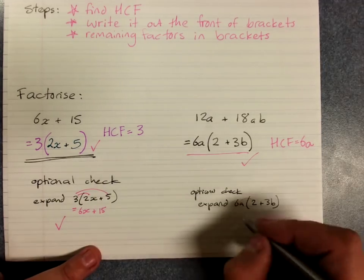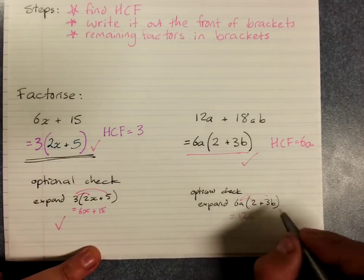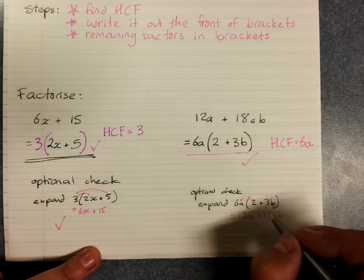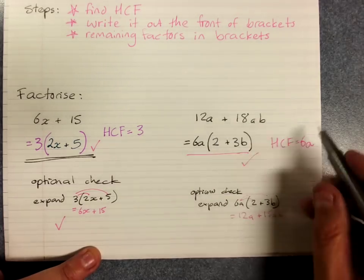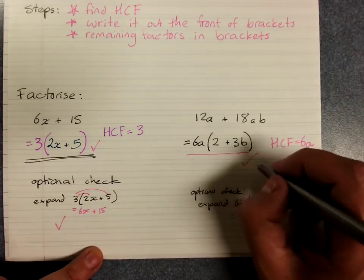6a times 2 is 12a. 6a times 3b. 6 times 3 is 18. a times b is ab. And it was a positive answer. I got the same answer. So I know that my factorization is correct.